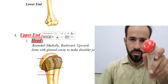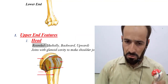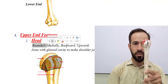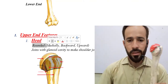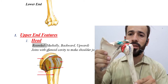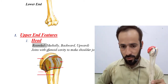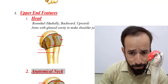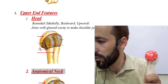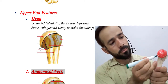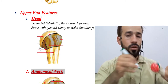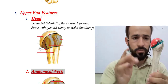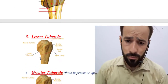The head of the humerus is rounded and directed medially, backward, and upward in anatomical position. It joins with the glenoid cavity to form the shoulder joint. After the head, there is the anatomical neck — you can see it highlighted in green on screen — which is the constriction just below the head.